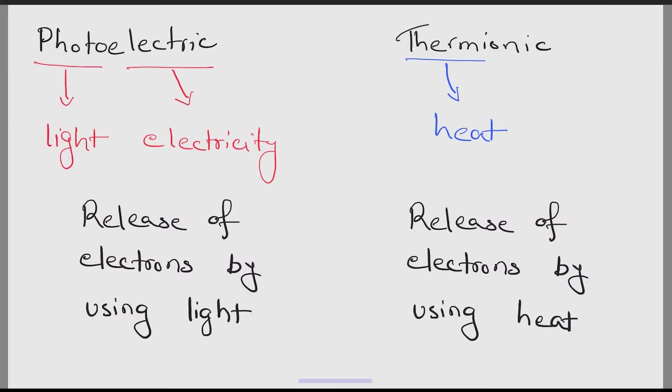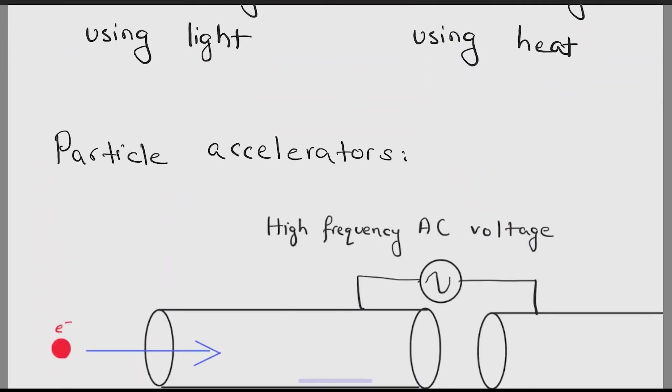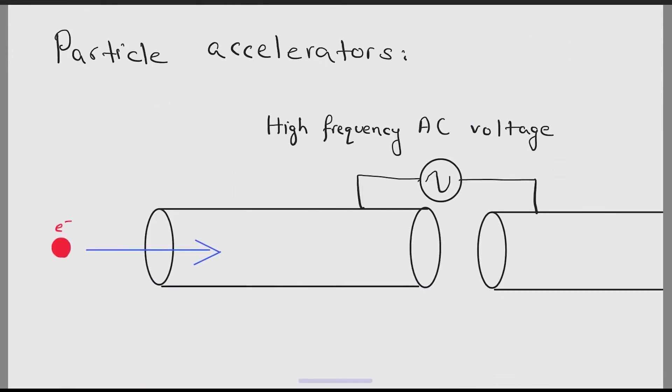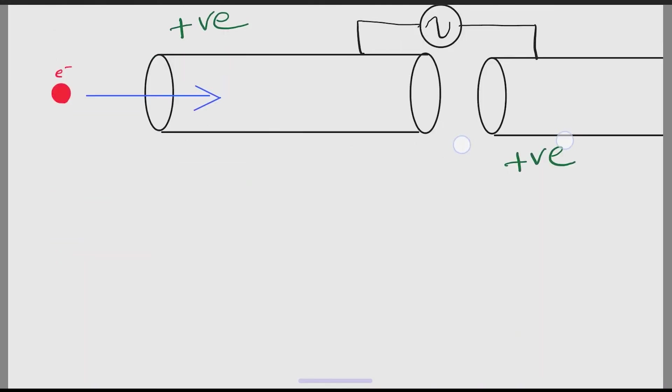Moving on, there are two different types of electron emission processes. The photoelectric effect uses light to release electrons and the thermionic effect uses heat to release electrons. A particle accelerator can accelerate any charged particle using electricity. The AC voltage is used to attract the negative electron. As the electron gets in, it is attracted by the next positive cylinder. This process continues and the electron gains immense speed.